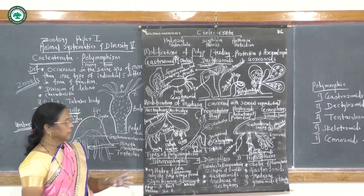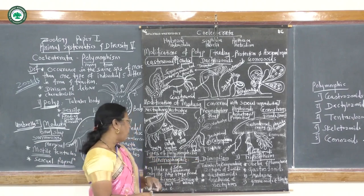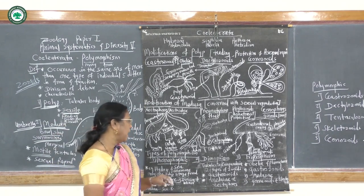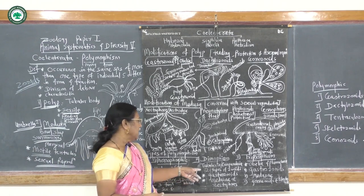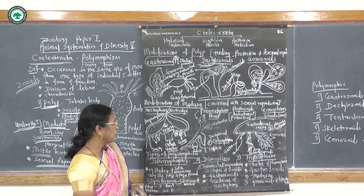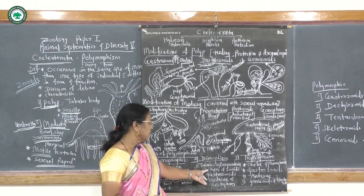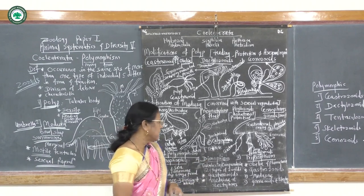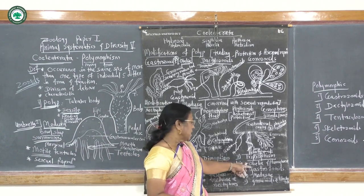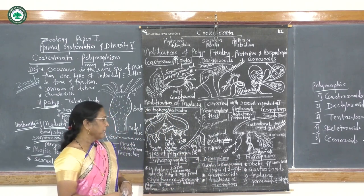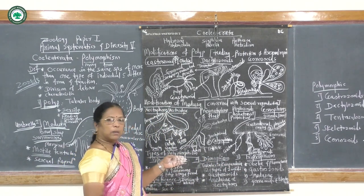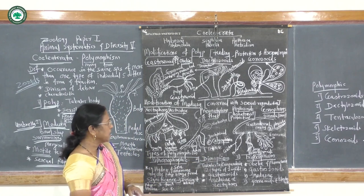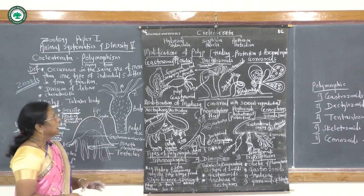Dimorphic means two forms may be found. Example: Tubularia and Campanularia — two types of zoids may be found, namely gastrozoids and medusae, and nectophores also found. Trimorphic means three forms — example Obelia and Plumularia — gastrozoid, medusae, and gonozoid. Gastrozoid is for feeding, medusae for protection and swimming purpose, and gonozoids or blastocytes for reproduction.